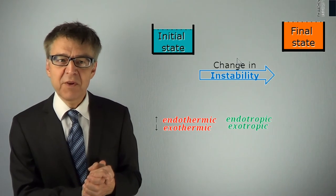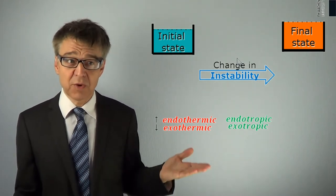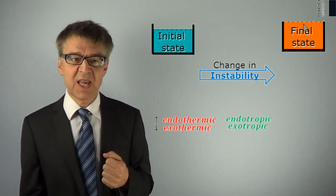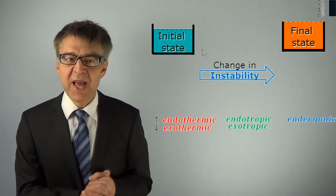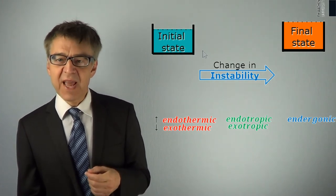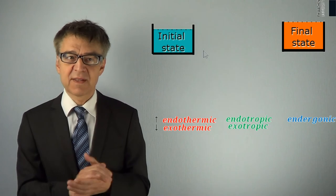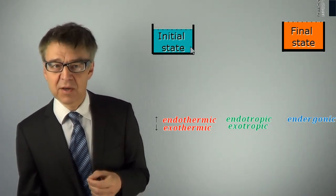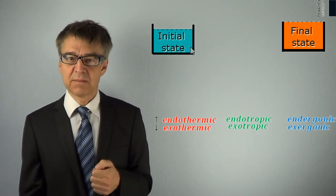Most important is the change in Gibbs free energy in instability. If Gibbs free energy increases during the process, that is, final state is more unstable than the initial state, we speak of an endergonic process. If delta G is negative, the final state is more stable than the initial state, it is an exergonic process. These specifications can be applied to any physical and chemical process.